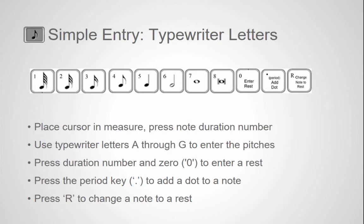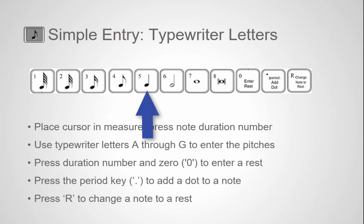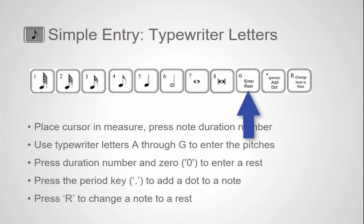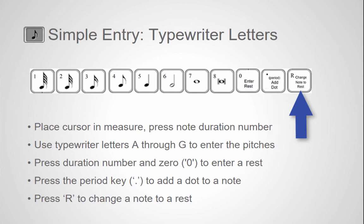This slide shows the numbers assigned to the different note duration values in the Simple Entry tool. For example, when you press 4 you select an eighth note value; press 5 for a quarter note; 6 for a half note, and so on. Press 0 to enter a rest, the period key to add a dot to a note, and R to change a note to a rest.